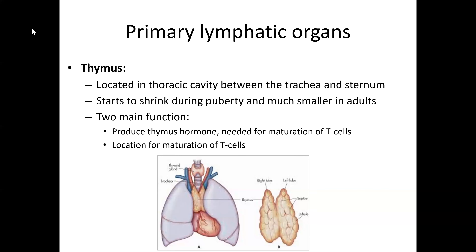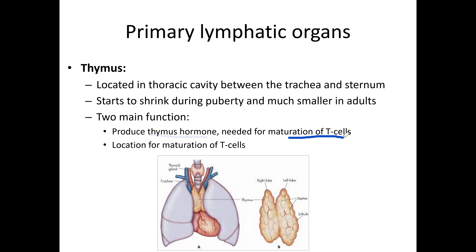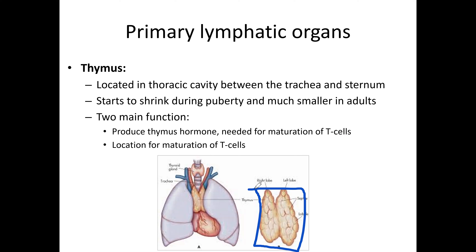The thymus is located superior to the heart in the thoracic cavity, between the trachea and sternum. It starts to shrink during puberty and is much smaller in adults. It has two main functions: producing thymus hormones needed for T cell maturation, and serving as the location for T cell maturation. T cells are produced in the bone marrow, then move into the thymus where they mature, and the thymus produces the hormones needed for that maturation.